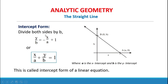Then divide both sides by B. Y over B equals negative X over A plus 1, or X over A plus Y over B equals 1. This is called the intercept form of a linear equation, where A is the x-intercept and B is the y-intercept.